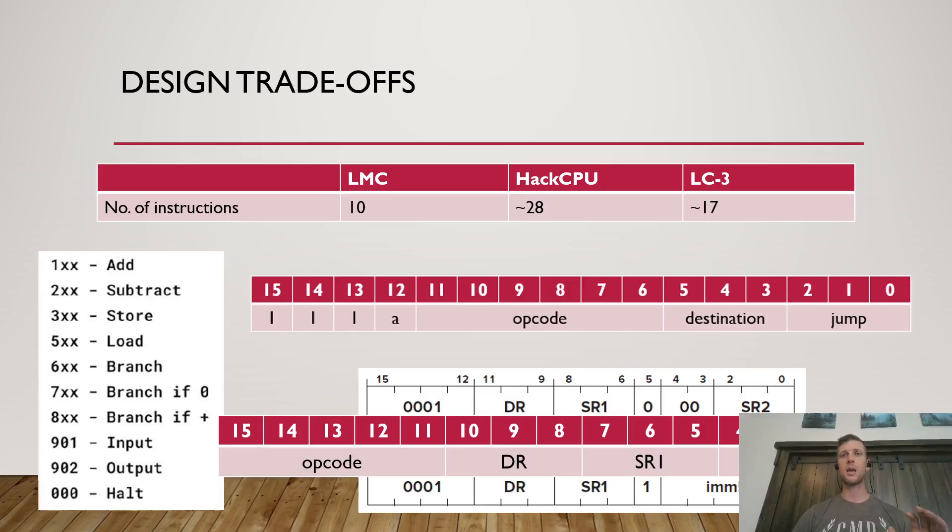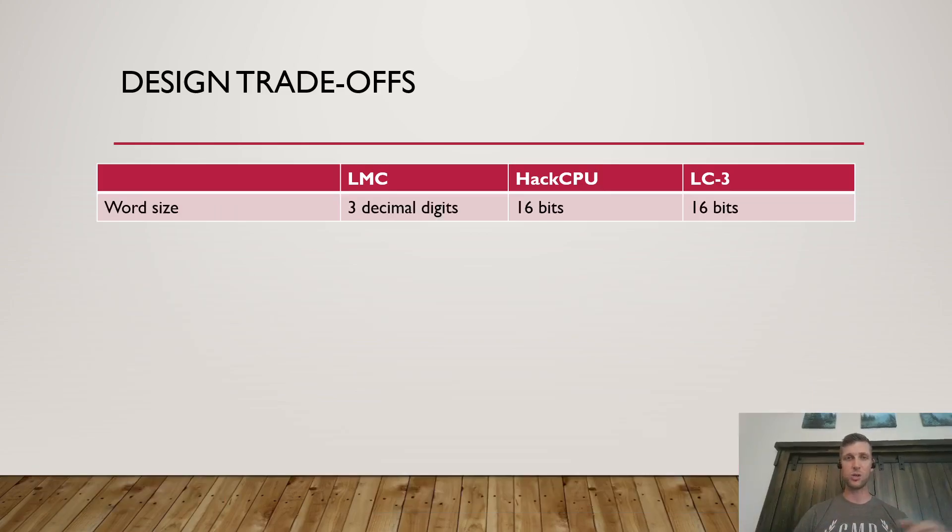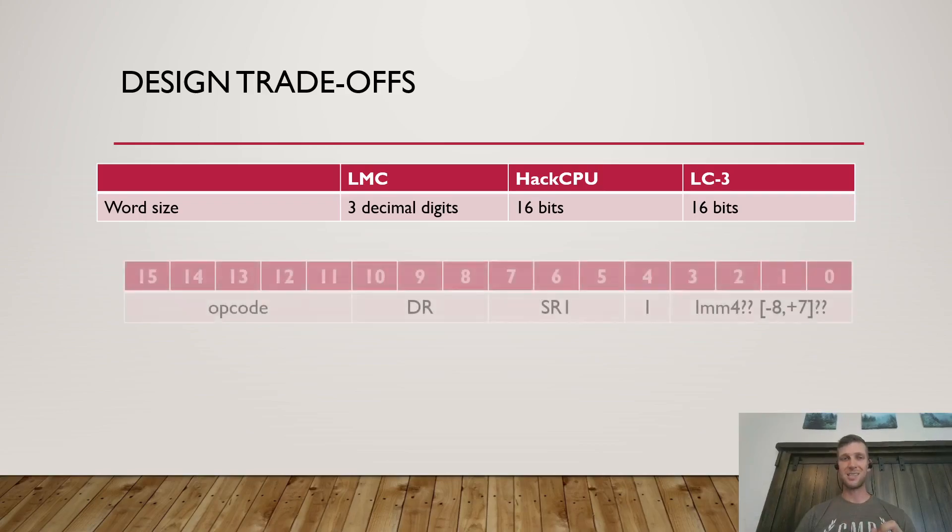So let's say we're going to try to change then how wide this instruction is. Okay. So let's take a look at the word size for these three computers for the little man computer. It was three decimal digits for the hack CPU and the LC3. They operate on 16 bits each.